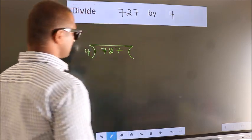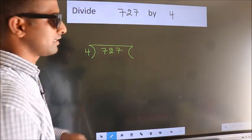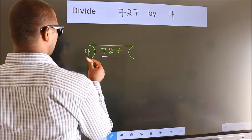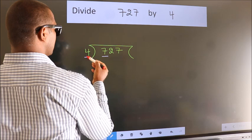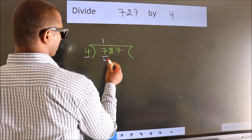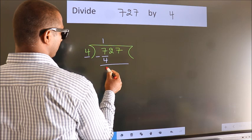This is step 1. Next, here we have 7 and 4. A number close to 7 in the 4 table is 4 ones, which is 4. Now we subtract and get 3.